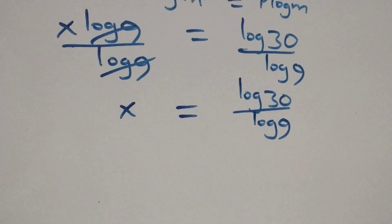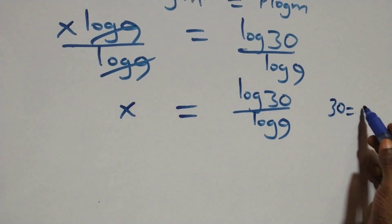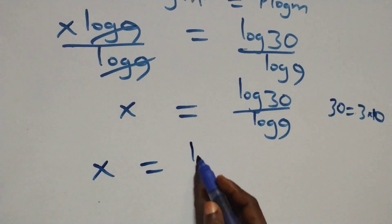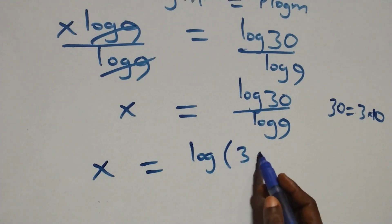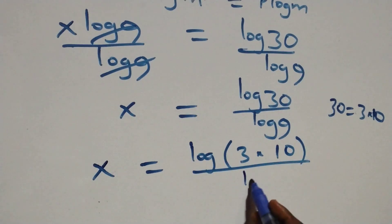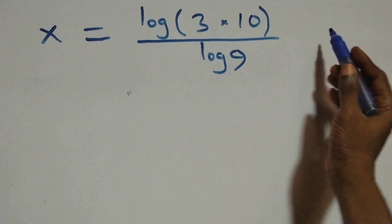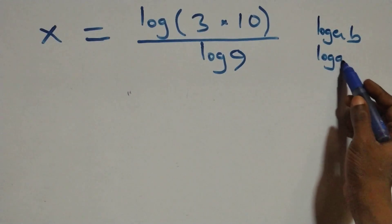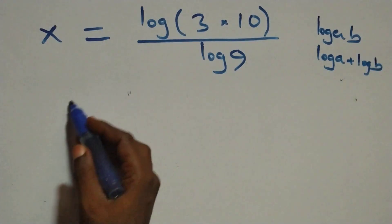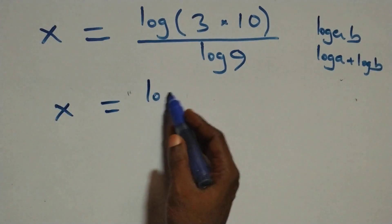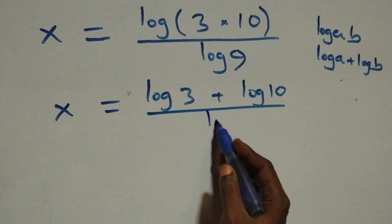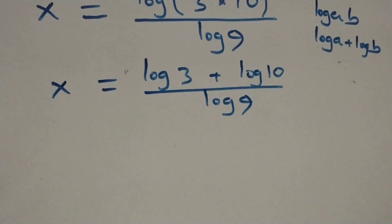Next step, we can write 30 as 3 times 10, which implies what we have becomes x equals log(3 times 10) over log 9. This follows from the logarithm law: log(a times b) is the same as log a plus log b. So what we have becomes x equals (log 3 plus log 10) over log 9.